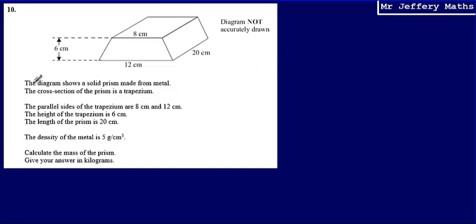This is question 10. We're given the diagram of a solid prism made from metal, and we're told that the cross-section of the prism is a trapezium. That trapezium shape is running all the way through the 3D prism. The parallel sides of the trapezium are 8 and 12, the height of the trapezium is 6, and the length of the prism is 20. The density of the metal is 5 grams per centimetre cubed, and we're asked to calculate the mass of the prism.